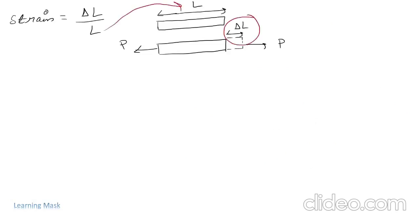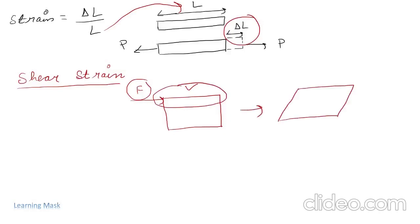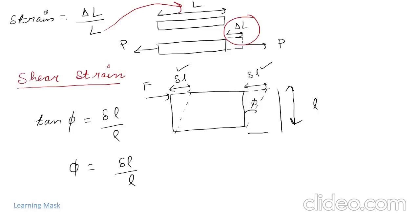Now we will define shear strain. This is our object and this is our shear force — the force acting tangentially to our surface. When this force acts on the surface, the upper layer will slide forward. Delta L is our displaced length of the side and phi is our strain angle. We define shear strain as phi, and we write tan(phi) = delta L / L. For small angles, tan(phi) equals phi, so shear strain equals delta L / L.